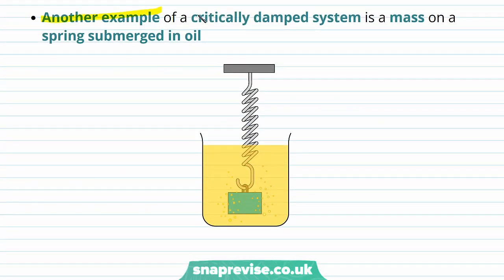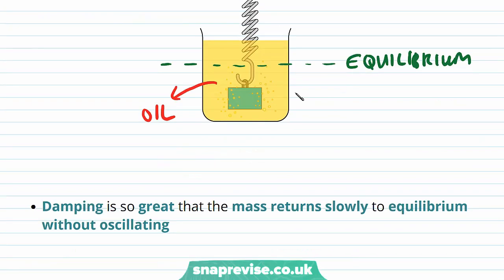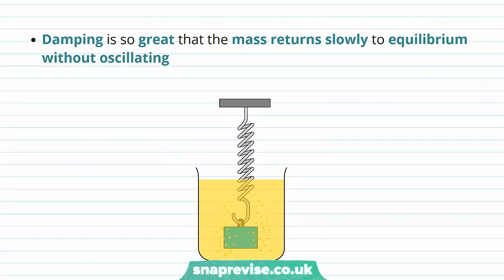Another example of a heavily damped system is a mass on a spring submerged in oil. Here is our equilibrium position, and the mass is moving slowly through oil. The damping is so great that the mass returns slowly to equilibrium without oscillating — the friction on the mass due to the oil is so large that the mass returns very, very slowly to equilibrium.